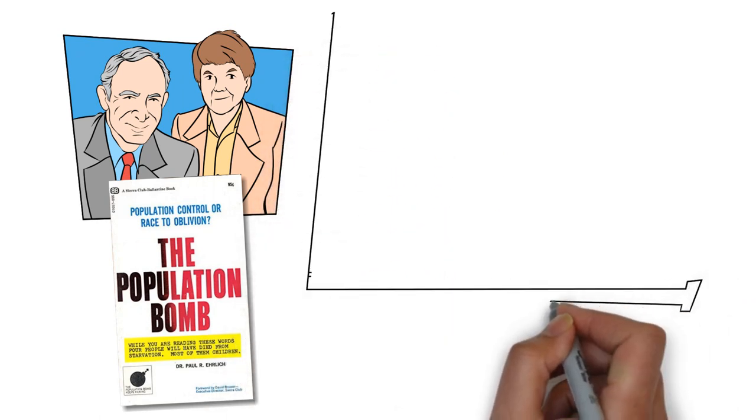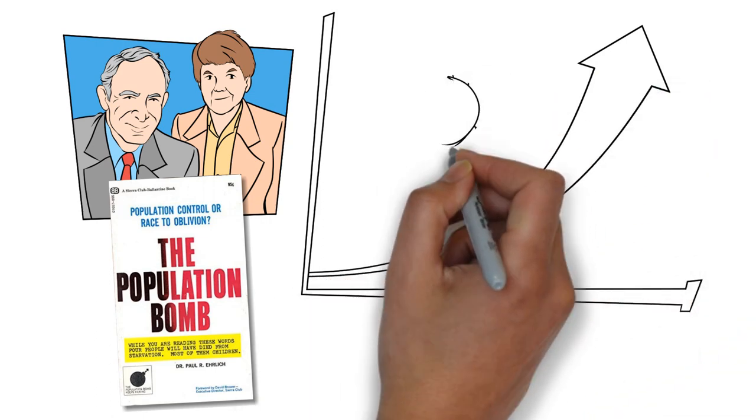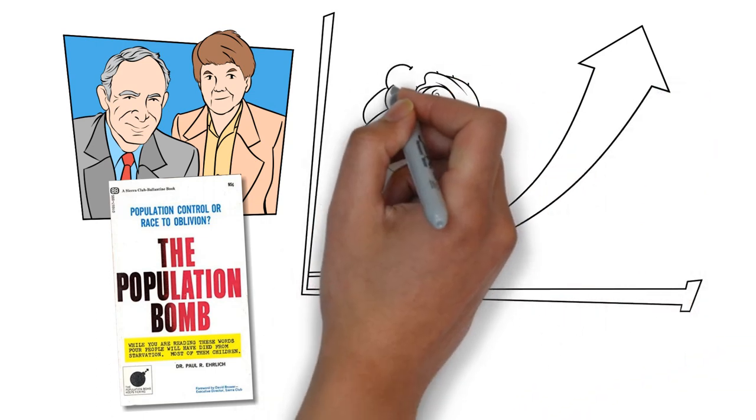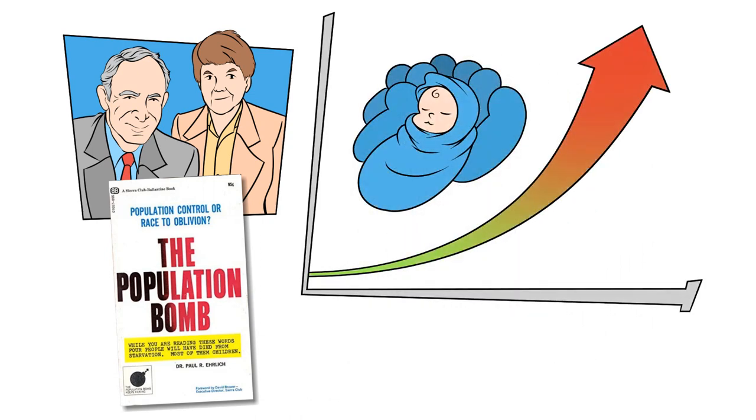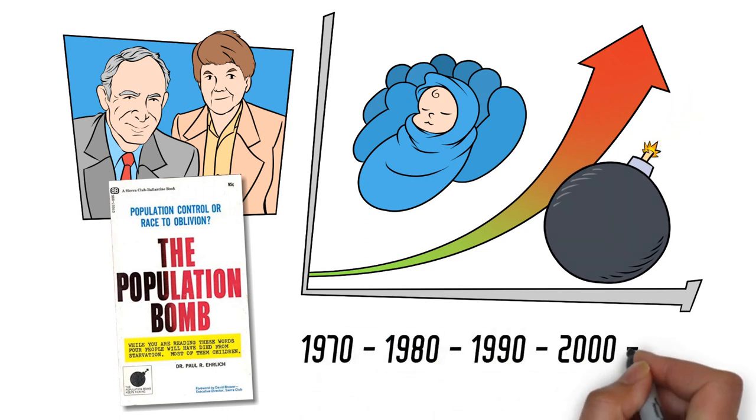The book warned that increasing birth rates, helped by the abundance of energy, would become a species-level crisis. Too many people would mean too little food, water, and land. Chaos would erupt. Doom would follow. All of this would happen in the coming decades.